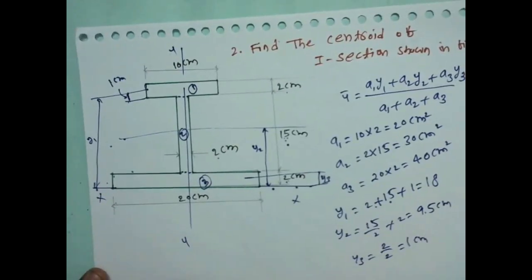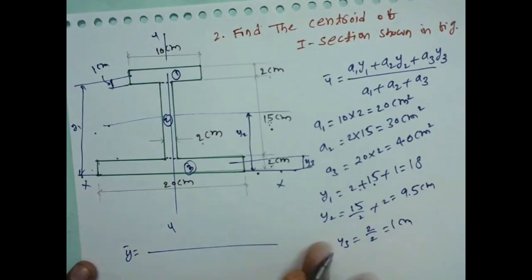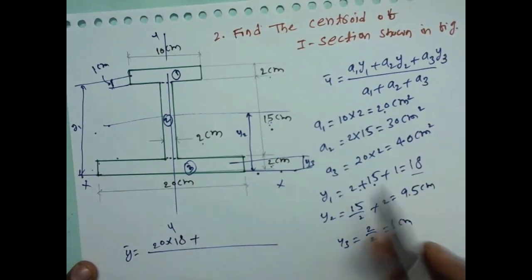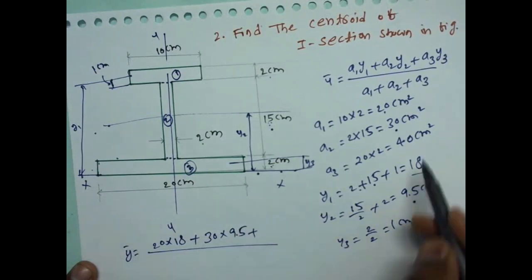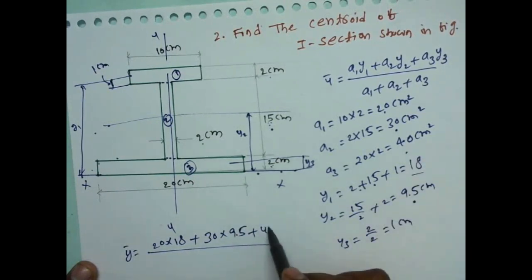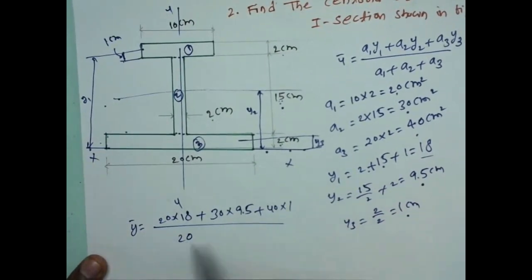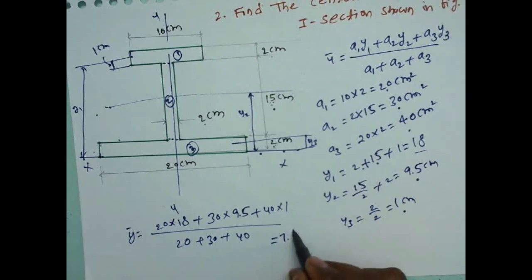Now, Y-bar = (A1·Y1 + A2·Y2 + A3·Y3) / (A1 + A2 + A3) = (20×18 + 30×9.5 + 40×1) / (20 + 30 + 40) = 7.61 cm.